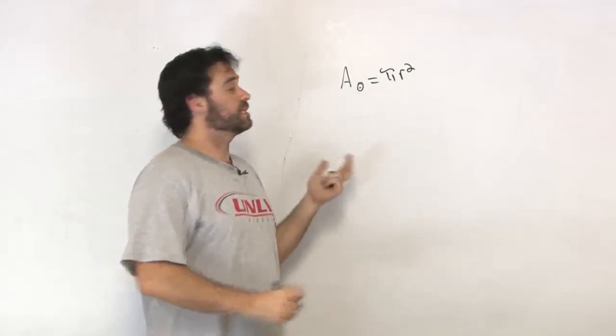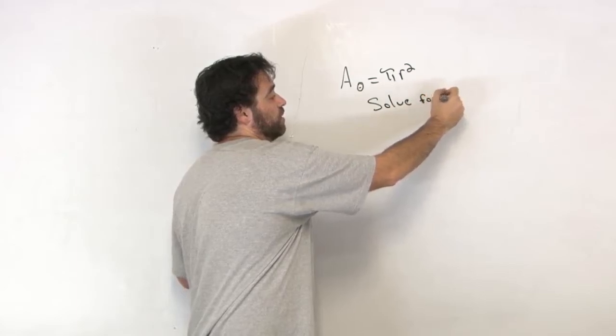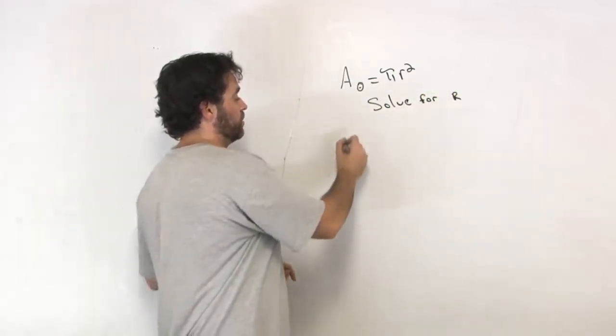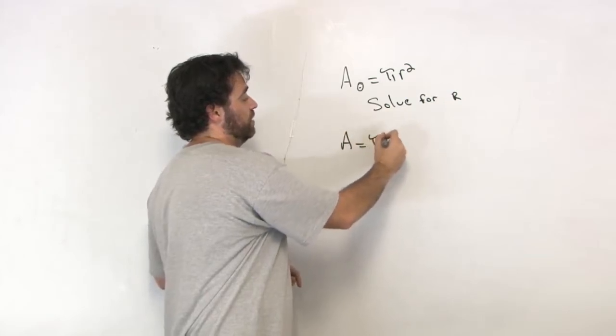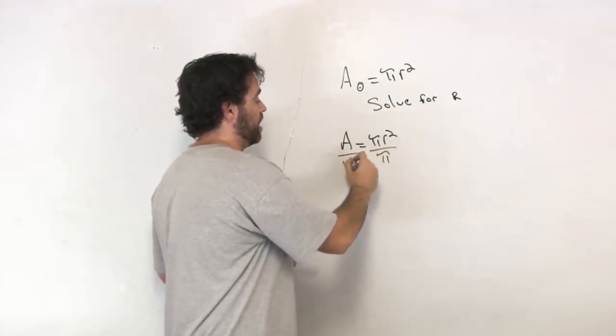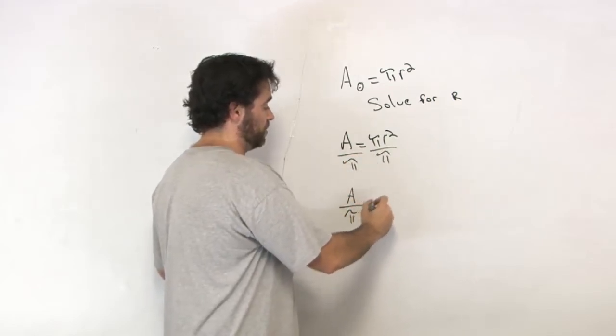And I say let's solve for r. So I get area equals pi r squared. Divide out the pi. So I get area divided by pi is equal to r squared.